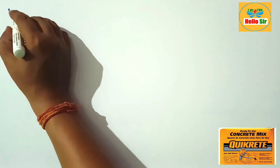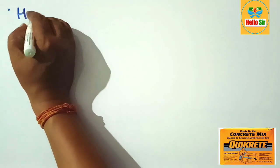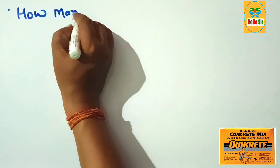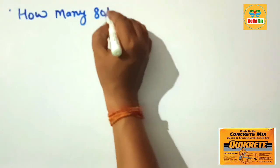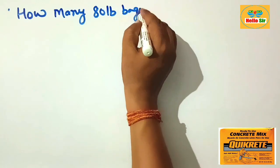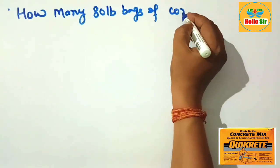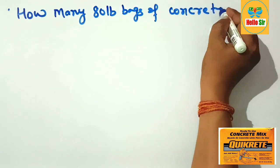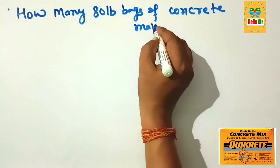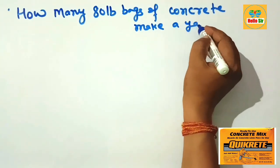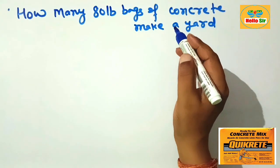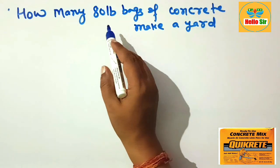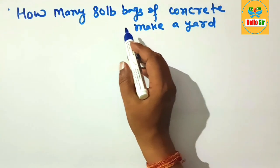Hi guys, today in this video you'll learn about how many 80 pound bags of concrete make a yard. It means you have to find out and calculate the number of 80 pound bags of concrete required to produce one cubic yard.